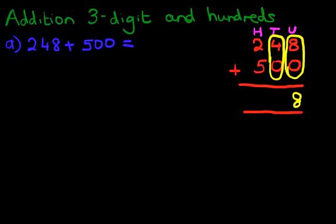We've got 4 plus 0. Again, we don't need to work this out. 4 plus 0 is 4. And lastly, we're going to add the hundreds column.